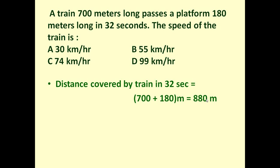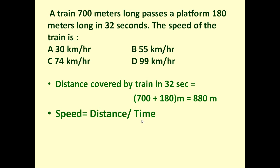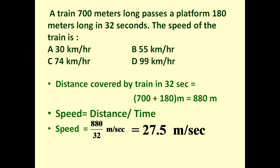The train travels 880 meters in 32 seconds. We know the formula: speed is equal to distance upon time. So the speed of the train is determined by distance divided by time. Distance is 880 meters and time is 32 seconds, so speed equals 880 divided by 32, which equals 27.5 meters per second.